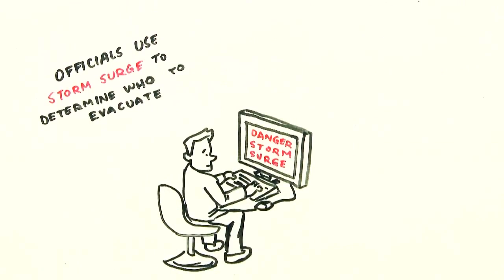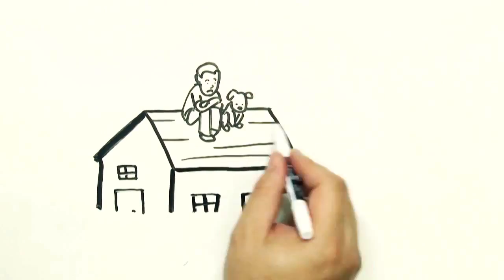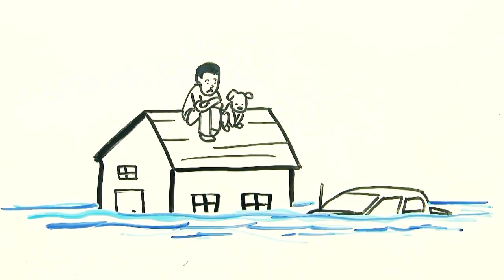Storm surge is what officials use when determining who to evacuate. Once water starts to rise, the destructive rush can quickly cover a lot of ground, homes, cars, people, pets.